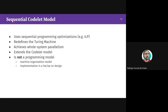Let's define the sequential codelet model. The idea is to use sequential program optimizations — like instruction-level parallelism — and redefine the Turing machine to achieve whole-system parallelism. It extends the codelet model. A reminder: the sequential codelet model is not another programming model. It is an entire machine organization model. An implementation would require hardware and software co-design, including programming languages and compilers.